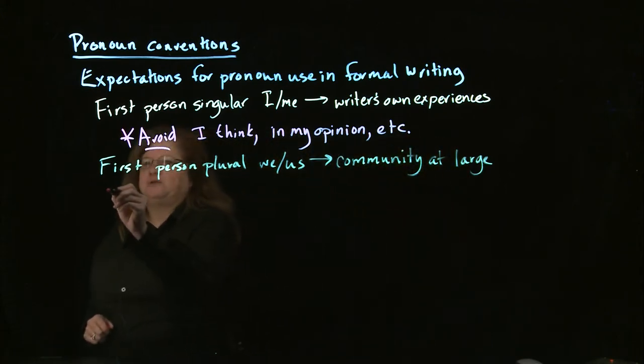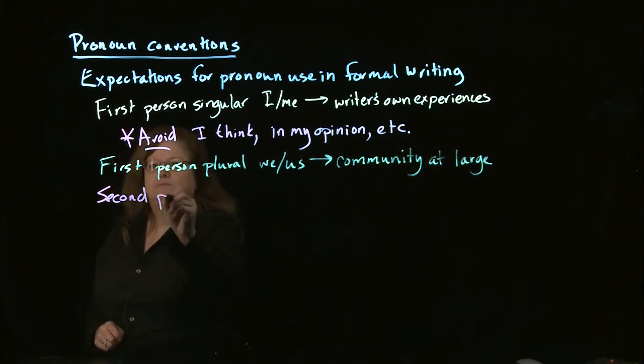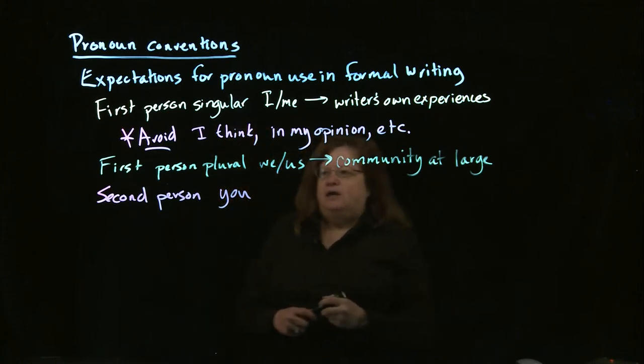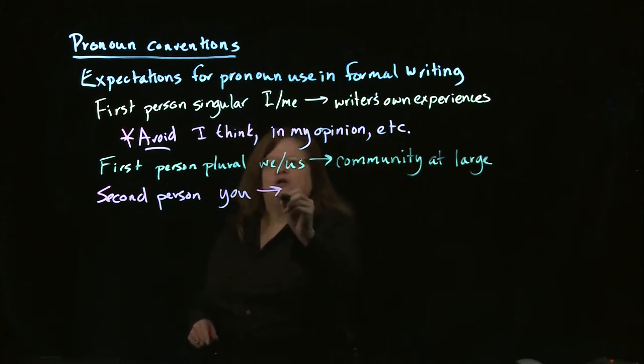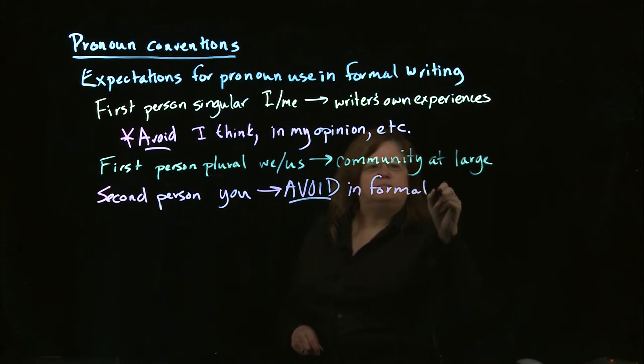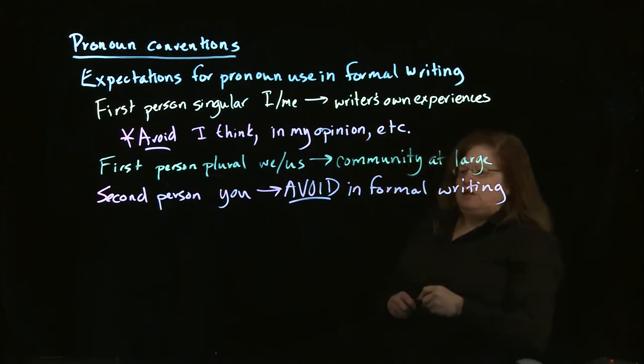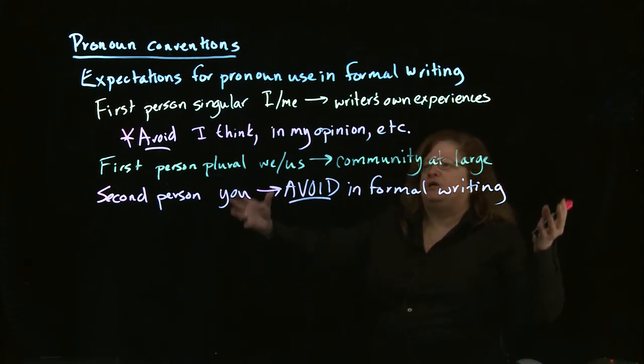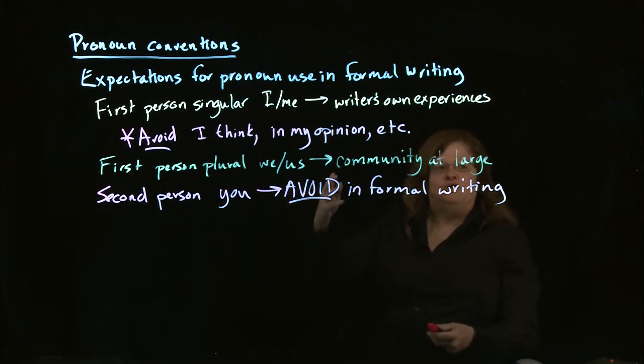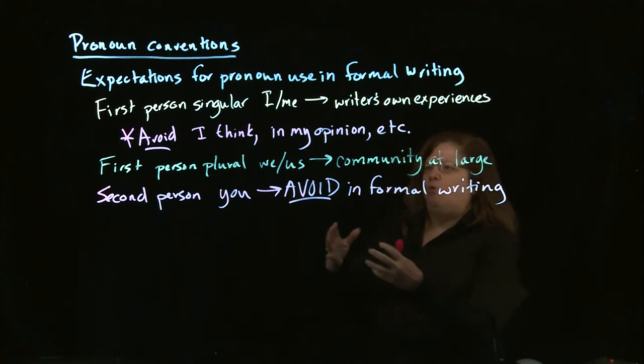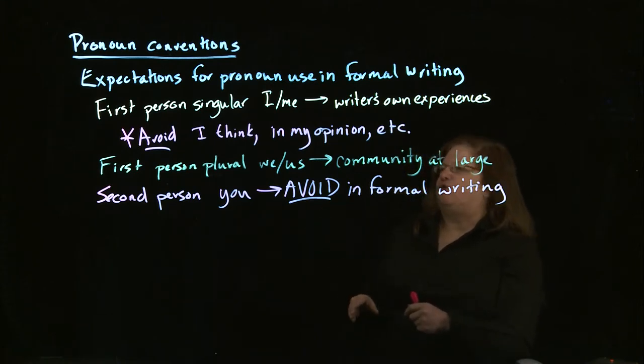Then we have the second person, which in singular and plural is you. That is something that you want to avoid in formal writing. In an essay where you have an academic audience, you don't want to get that friendly or chatty. You can feel community by using we and us, but we don't use you in formal academic writing. That, as I said, it's too chatty. It's too close. You want to maintain at least a little bit of distance between yourself and the reader.